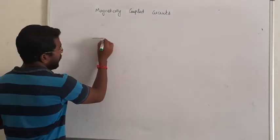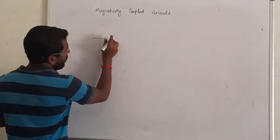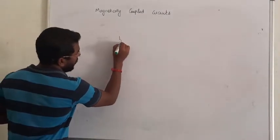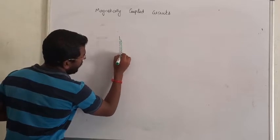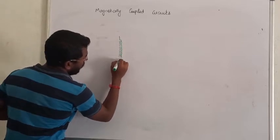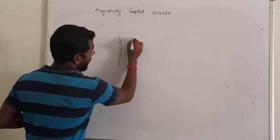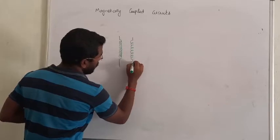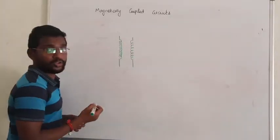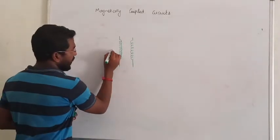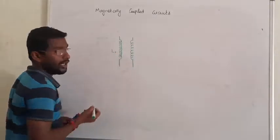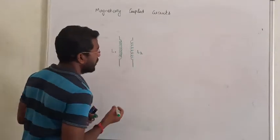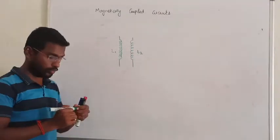So let me take two inductors. I will take an inductor here, and I am going to bring one more inductor. Let us assume the inductance offered by coil 1 is L1, and the inductance offered by coil 2 is L2.